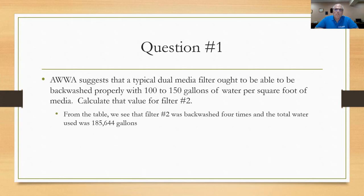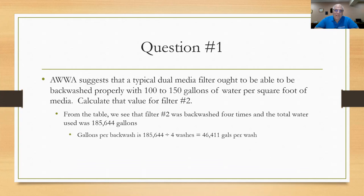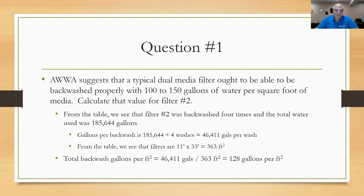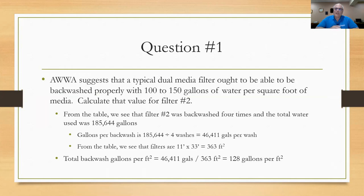From the table, filter number two was backwashed four times and used 185,644 gallons of water. So gallons per backwash = 185,644 ÷ 4 = about 46,411 gallons per wash. The filters are 11 ft × 33 ft = 363 square feet each. Taking 46,411 ÷ 363 square feet comes out to about 128 gallons per square foot, which is right in the 100–150 range that AWWA suggests. So that's good.